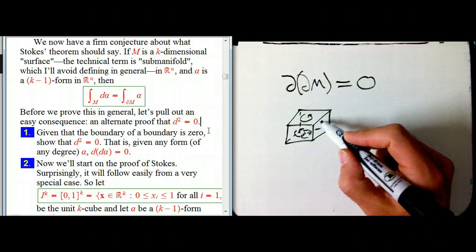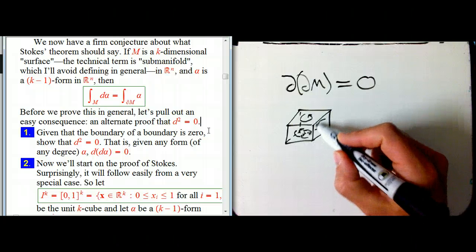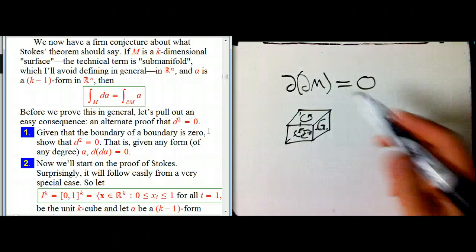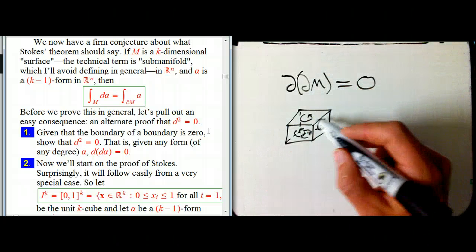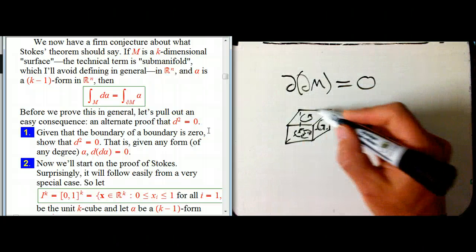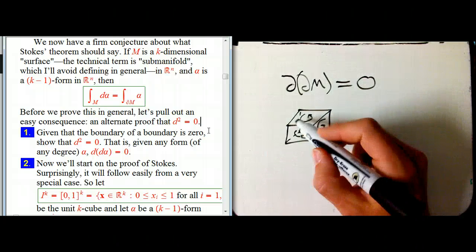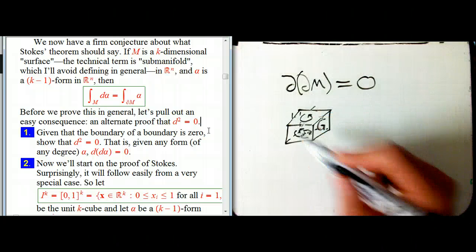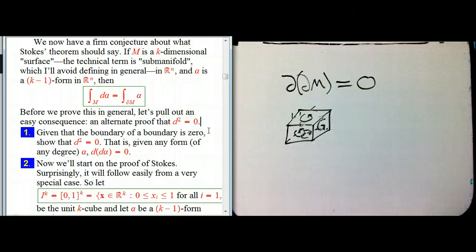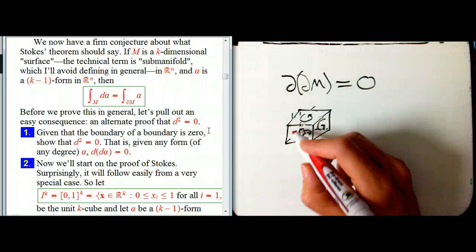Similarly, the only way to drag this over and get the right kind of consistent orientation is like this. And let's see what happens when I look at the boundary of the boundary. So the boundary of this face are these edges.